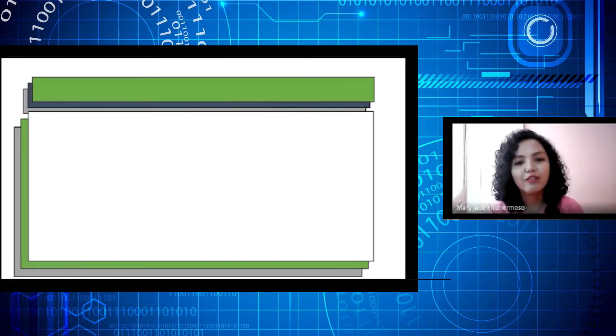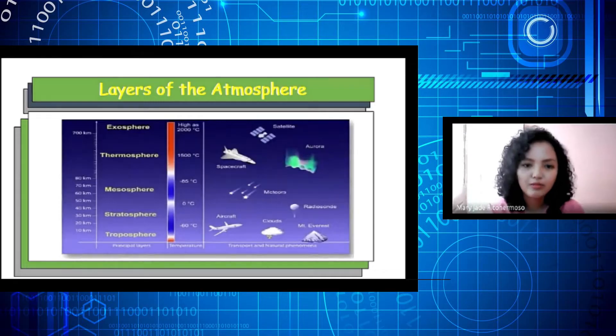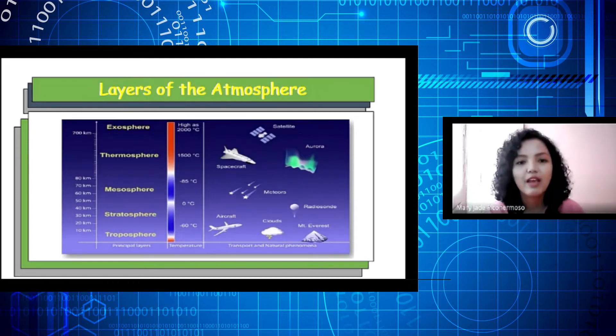Here are the layers of the atmosphere. From the bottom, we have the troposphere, followed by stratosphere, and then mesosphere. Next is thermosphere, and the last layer is the exosphere.